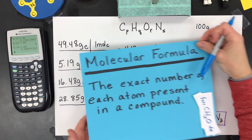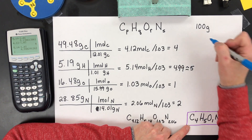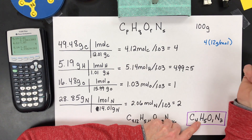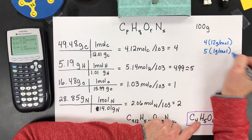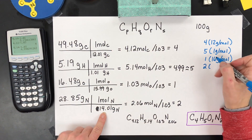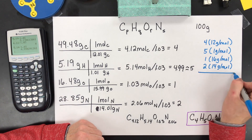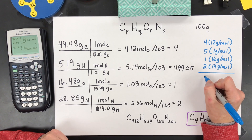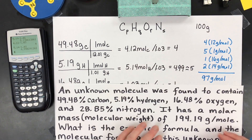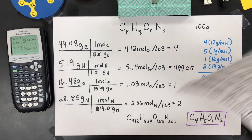The molecular formula is the exact number of atoms present, so this empirical formula could be it — you never know. First, find the molar mass of the empirical formula. It's 4 times 12 grams per mole for carbon, plus 5 times 1 gram per mole for hydrogen, plus 1 times 16 for oxygen, plus 2 times 14 for nitrogen. You add this all up and you get a total of about 97 grams per mole.